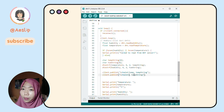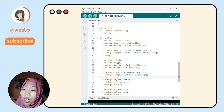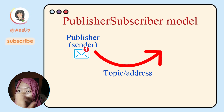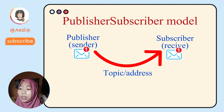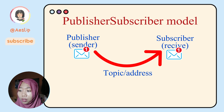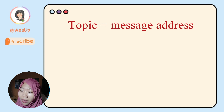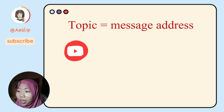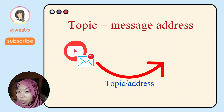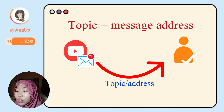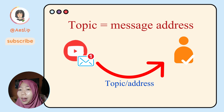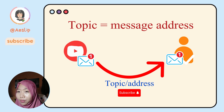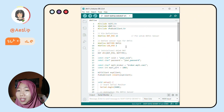What is a topic? MQTT uses the publisher-subscriber model. The publisher sends a message to a specific topic, and the subscriber subscribes to that topic to receive the message. Simply put, a topic is a message address in MQTT. For example, if I have a YouTube channel, I publish my video to my channel as the publisher, and you as the subscriber receive notifications from my channel. So the topic is simply the message address.